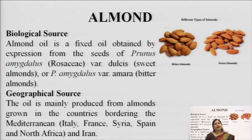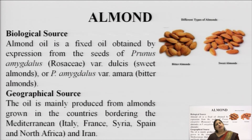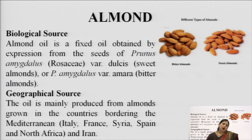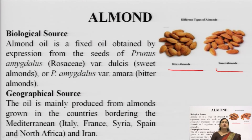We now come to the drug bitter almond. Almonds are consumed as dry fruits — sweet almonds are very good for the brain and eyes as they contain tocopherols from which vitamin E is made. Bitter almond is very similar to sweet almond except that it contains an added compound, a hydrocyanic acid derivative which is a cyanogenic glycoside. That is the only difference between bitter almond and sweet almond, and there is not much difference in visual appearance between the two.